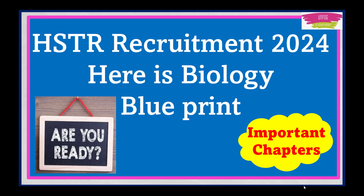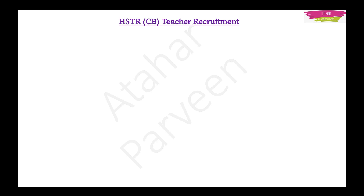This job is going to change your life if you get it. In HSTR, if you are a PM method aspirant — that is, if you have done physics and maths in your graduation — then you will be writing HSTR for PM method. If you have done chemistry and biology in your degree, then you will be writing the exam for HSTR CB method. There will be Paper 1 and Paper 2 in the examination, conducted on the same day — Paper 1 in the morning and Paper 2 in the afternoon.